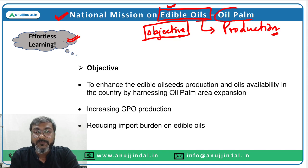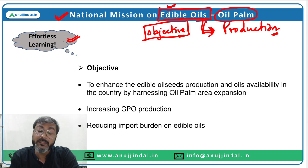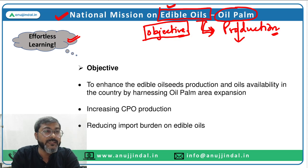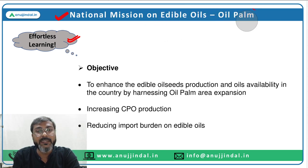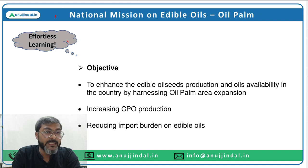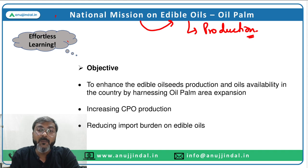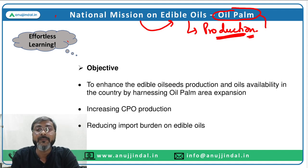What is the meaning of 'Oil Palm' here? The government wants to increase the production of edible oil, and this will be done by harnessing oil palm area expansion. The objective — if we derive it from the name — is: National Mission on Edible Oils means the government wants to increase the production of edible oil in the country, and this production will be increased by harnessing the oil palm area expansion across the country.